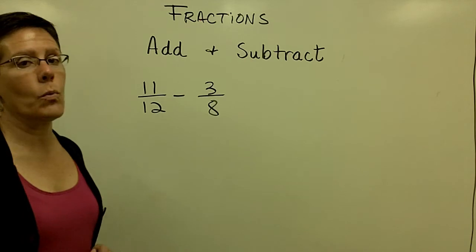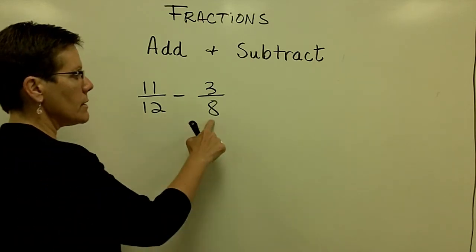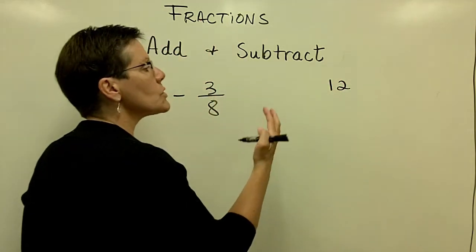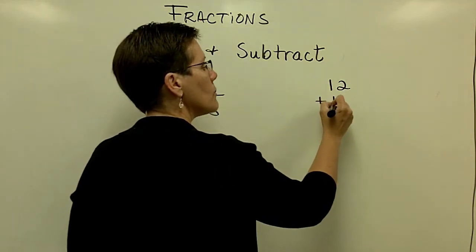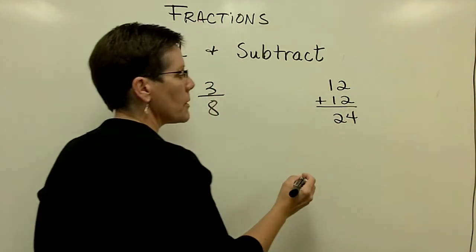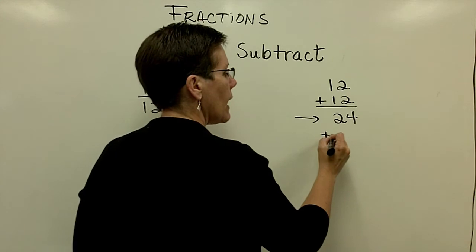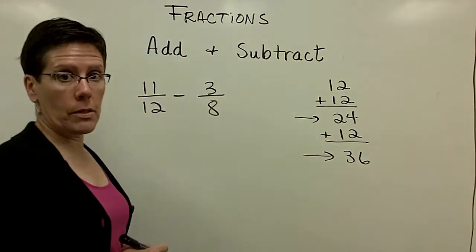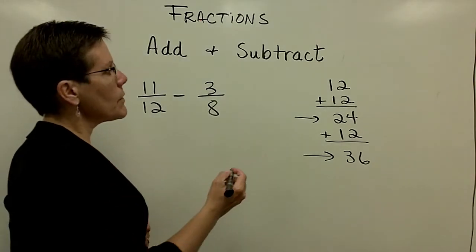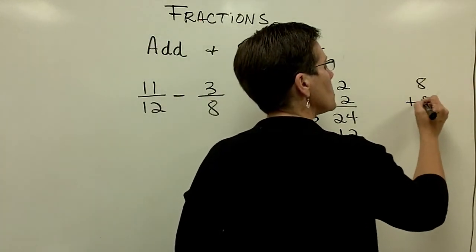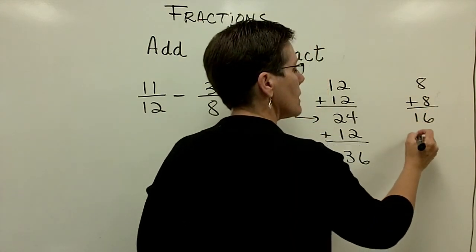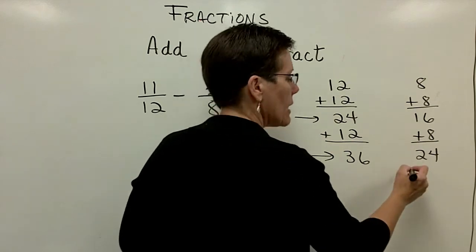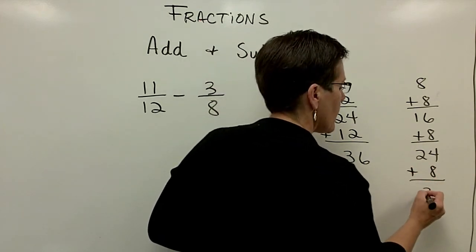And another way to find a common denominator is to take these denominators and list them as multiples. So take the number 12 and add 12 to it, and you get the number 24. So that's a multiple of 12. And add another 12 to that, and you get 36. That's another multiple of 12. You would do the same thing with the number 8. You'd add 8 to itself and get 16, and add 8 again and get 24, and possibly add 8 again and get 32.